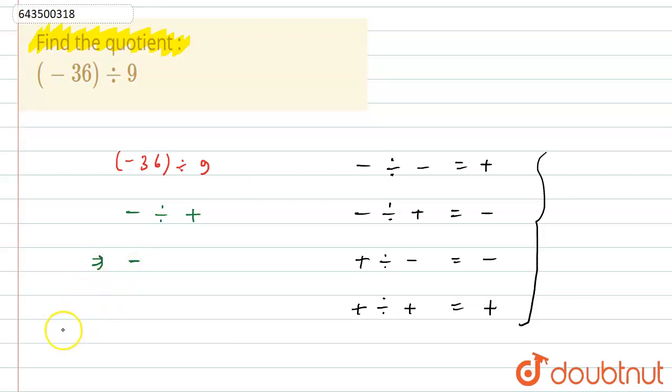Now what is quotient? So if I divide this 36 by 9, 9 fours are 36.